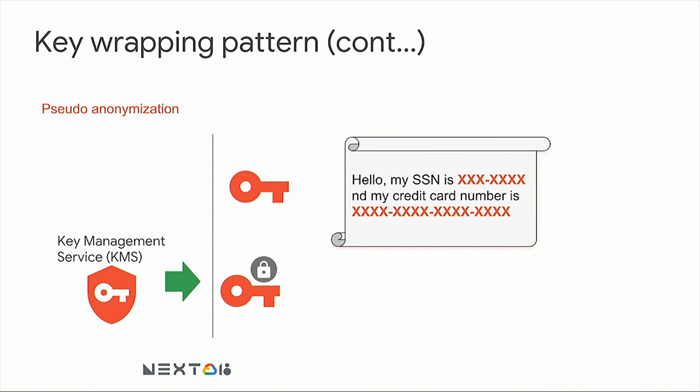You can also use this approach for zero-anonymization. If you're storing files with sensitive information such as social security numbers or credit card numbers, instead of sending the whole file to KMS, you use a local encryption key to anonymize that information, then send the local key to KMS to get encrypted.